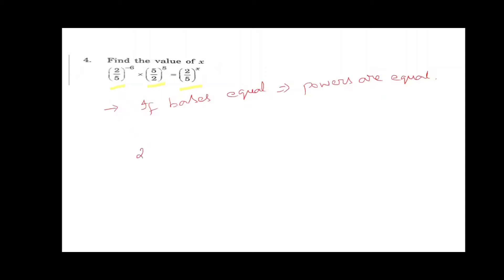Here 2 by 5 and 5 by 2 are different bases. We need to change 5 by 2. The reciprocal of 5 by 2 is 2 by 5. So the power will get minus.